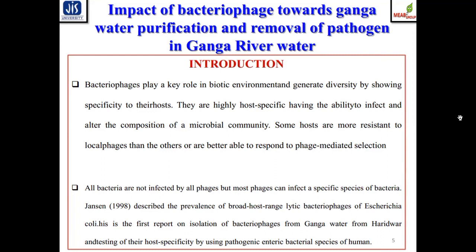Phages follow two types of life cycle: lytic and lysogenic. In the lysogenic life cycle, bacteriophages integrate their genome within the host genomic DNA. In the lytic life cycle, they multiply within the host, then lyse and release viral particles to continue the next cycle. All bacteria are not affected by all phages, but most phages can infect a specific species of bacteria. Jensen in 1998 described the prevalence of broad host range lytic bacteriophages of Escherichia coli.